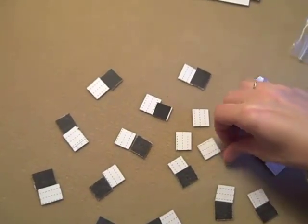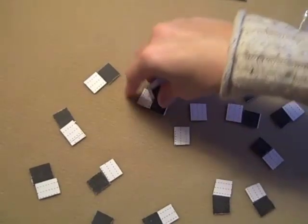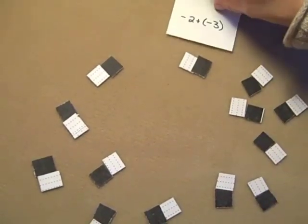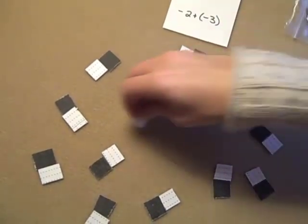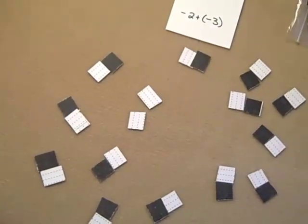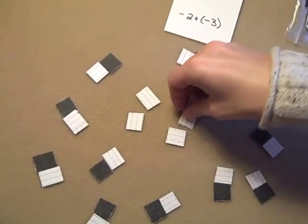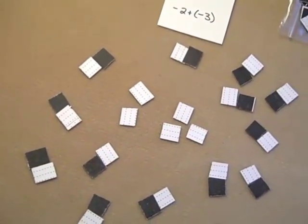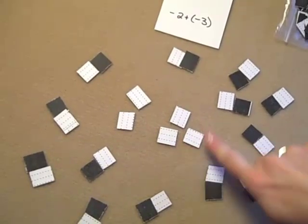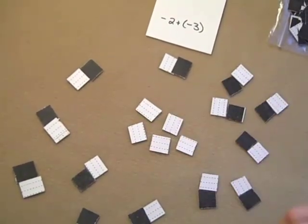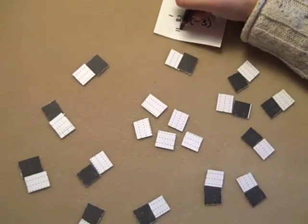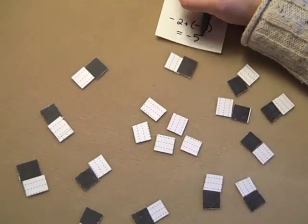We can also do problems that show negatives plus negatives. This turns out to be just as easy as positives plus positives. Here's negative 2 and negative 3, and if I scoot them together, there's no zeros created, so my answer here would be negative 5.